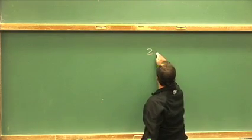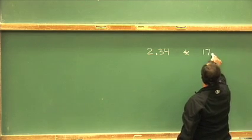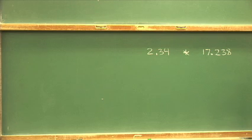I am going to take two numbers, 2.34, and multiply them by 17.238. These might be centimeters for a measurement of an area, or time units, or something else. On my calculator, I am going to get an answer, and my calculator is not helping me out with significant figures.